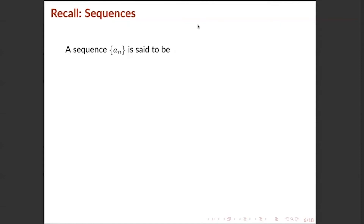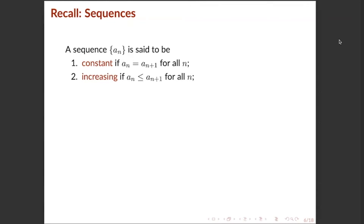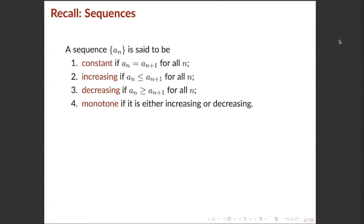Moving forward, we have more definitions for sequences. A sequence {a_n} is said to be: (1) constant if a_n = a_{n+1} for all n — meaning all terms are equal; (2) increasing if a_n ≤ a_{n+1} for all n — meaning every succeeding term is increasing in value; (3) decreasing if a_n ≥ a_{n+1} for all n — meaning every succeeding term is less than or equal to the prior term; and (4) monotone if it is either increasing or decreasing.